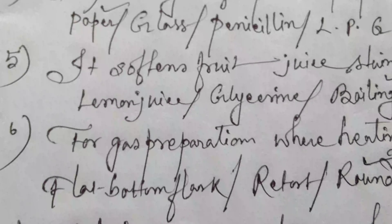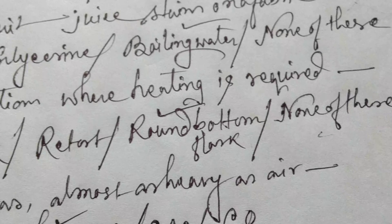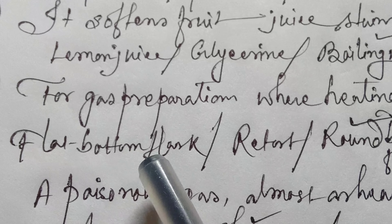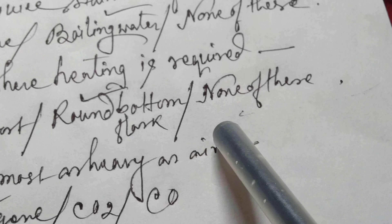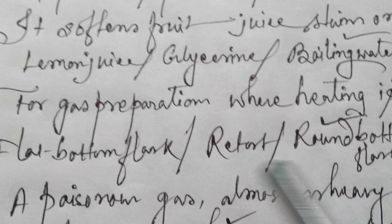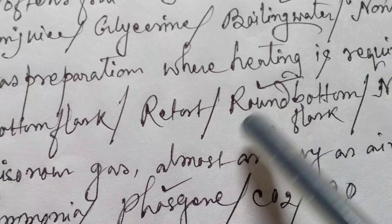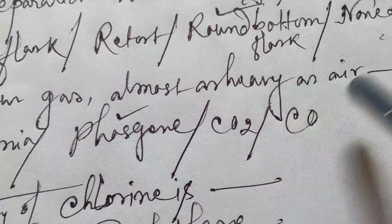Question six: for gas preparation where heating is required, which flask is used — flat bottom flask, retort, round bottom flask, or none of these? The answer is round bottom flask. For gas preparation it is mandatory to use a round bottom flask.